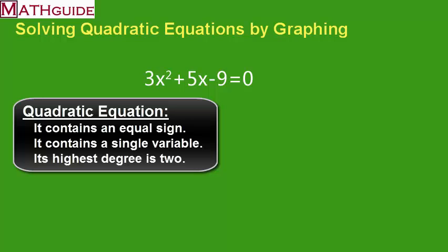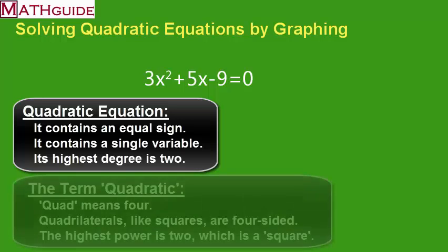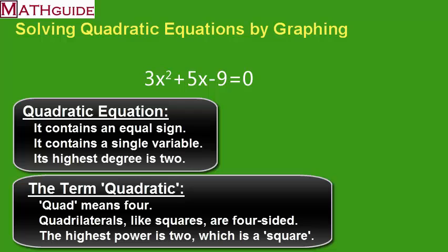We know that the word quadrilateral has that word quad, meaning four sides, and here we have a quadratic refers to a square. Really, squares have four sides, so that's the connection. So anything that has an equal sign, and it contains a single variable, highest power squared, that is a quadratic equation.